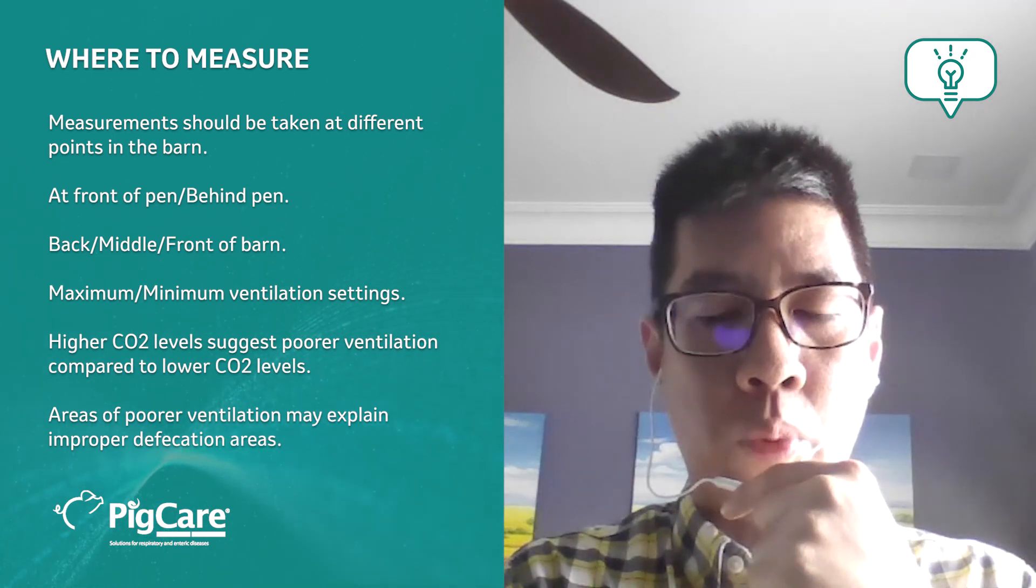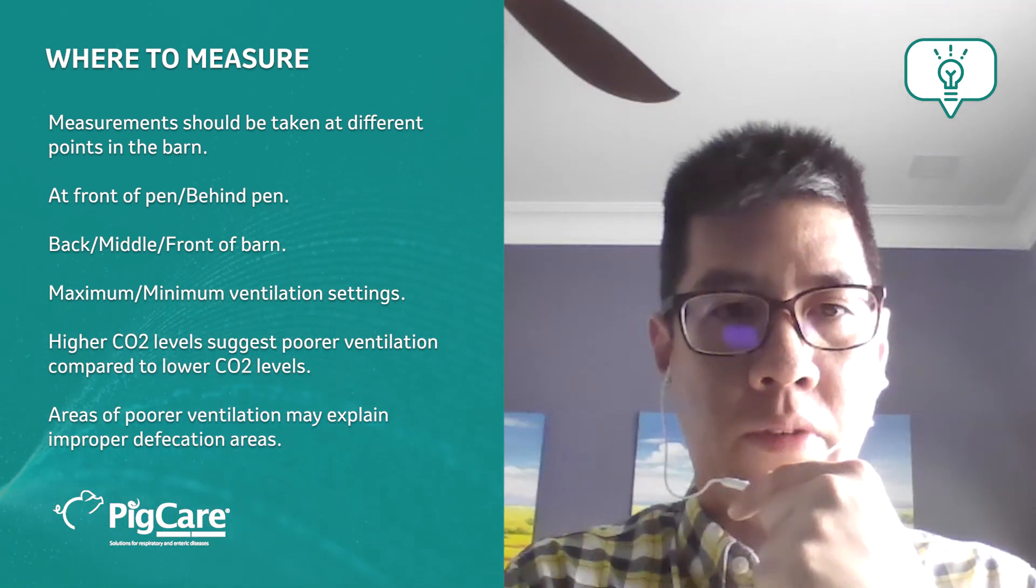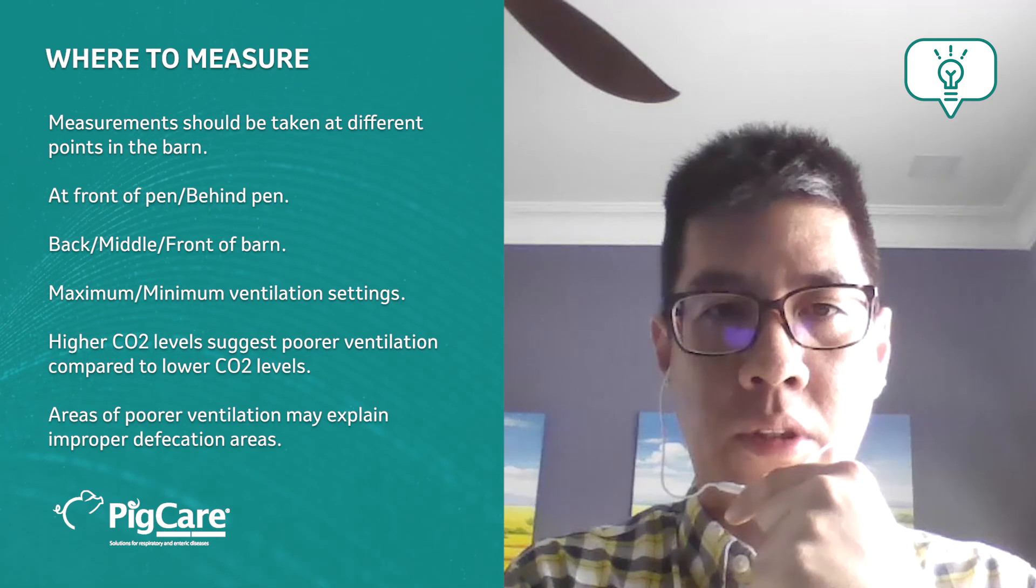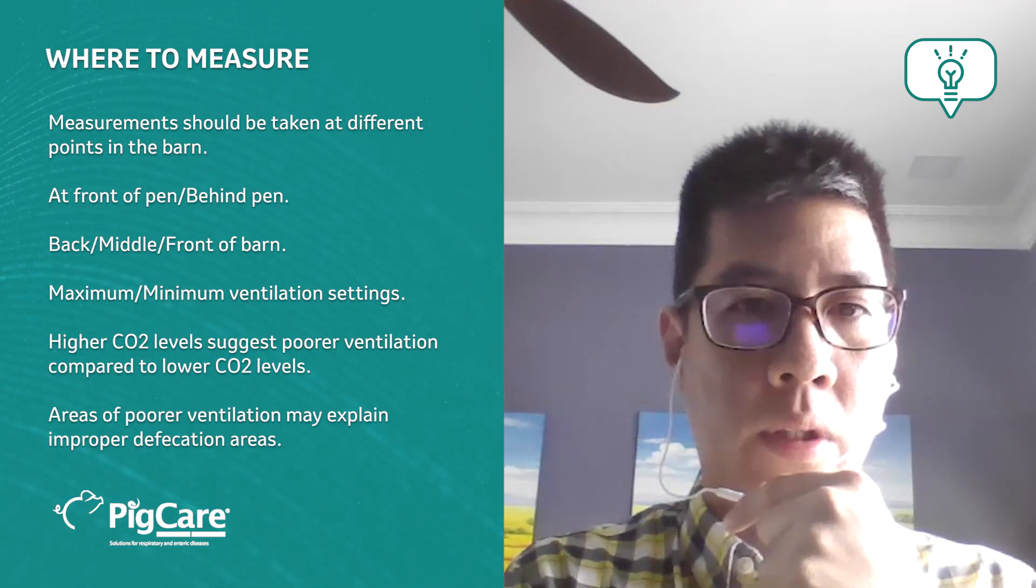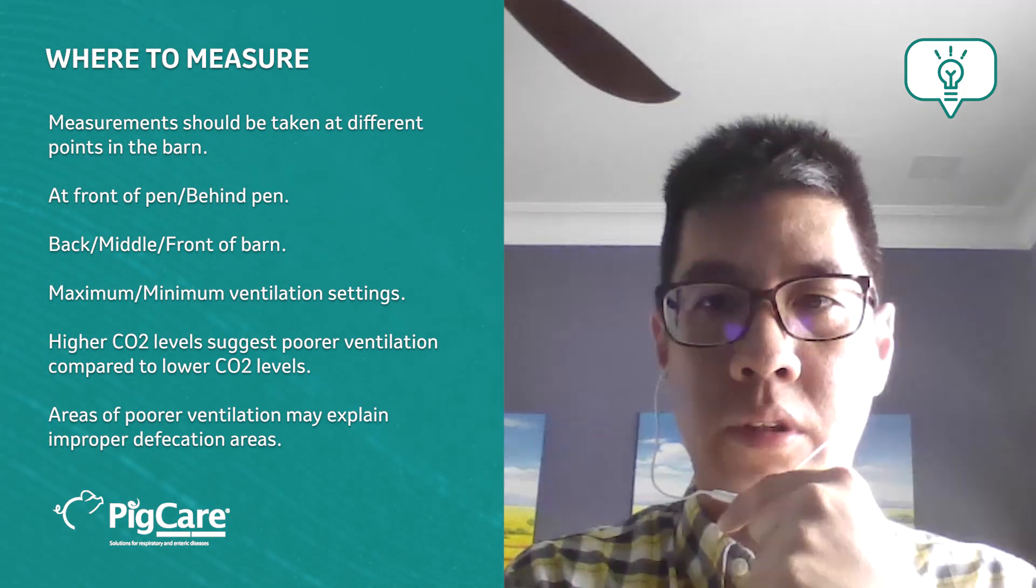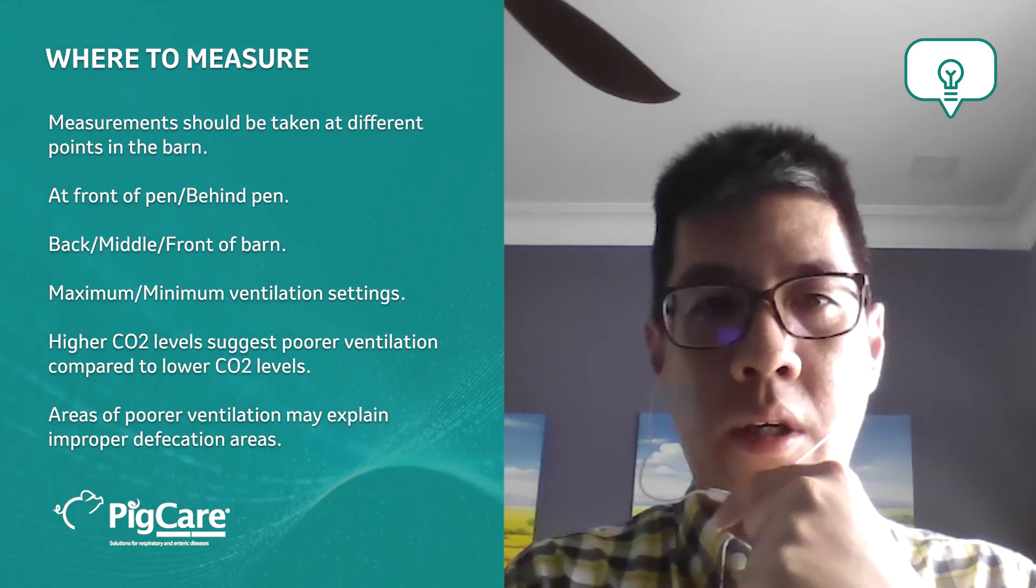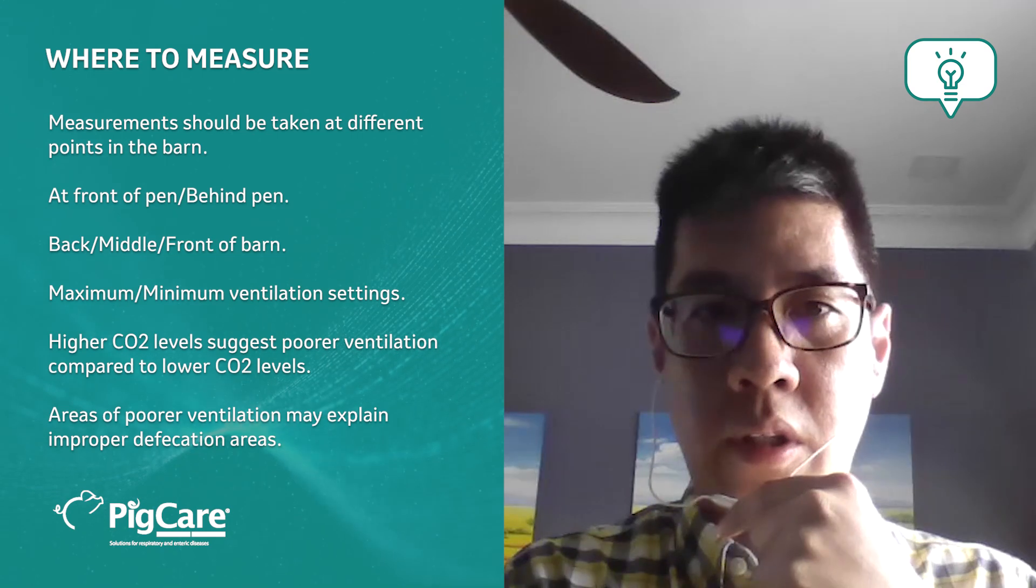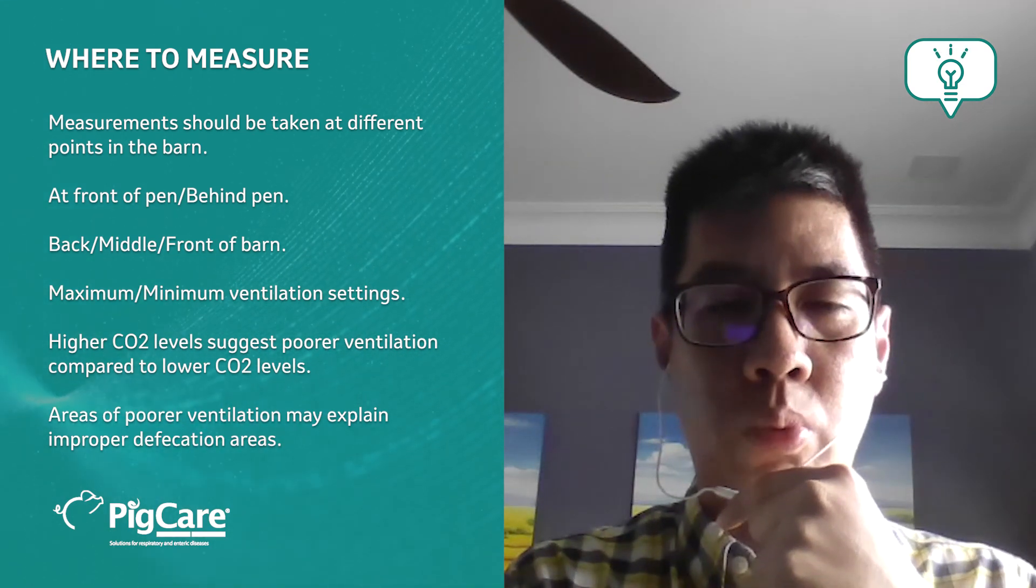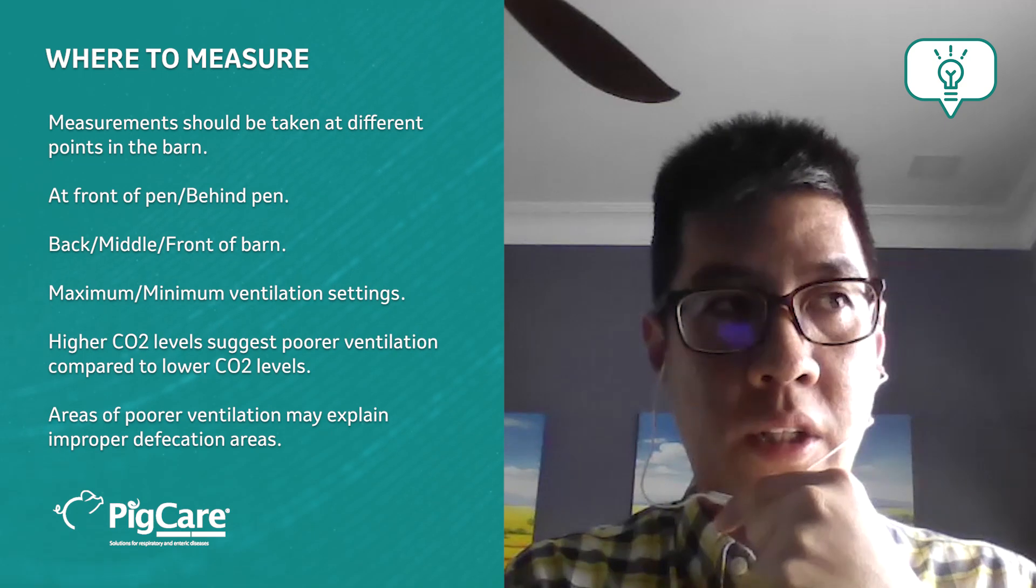We also recommend that the ventilation system is tested at different settings. For example, we can set the ventilation system to maximum ventilation, take a set of readings, and then set it to minimum ventilation and take a set of readings, because we would expect quite a difference in these readings.